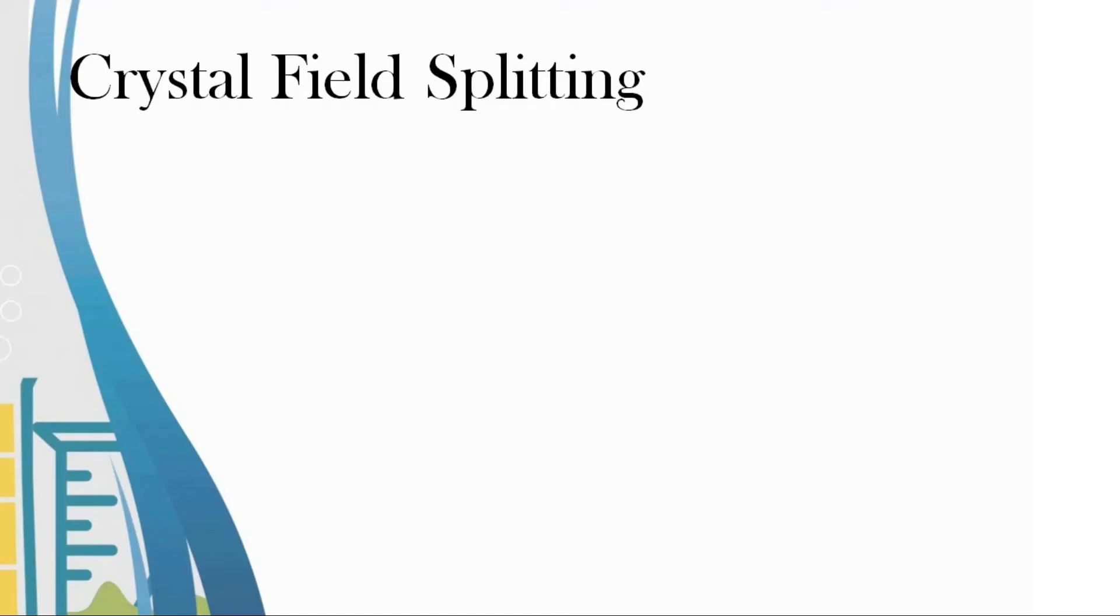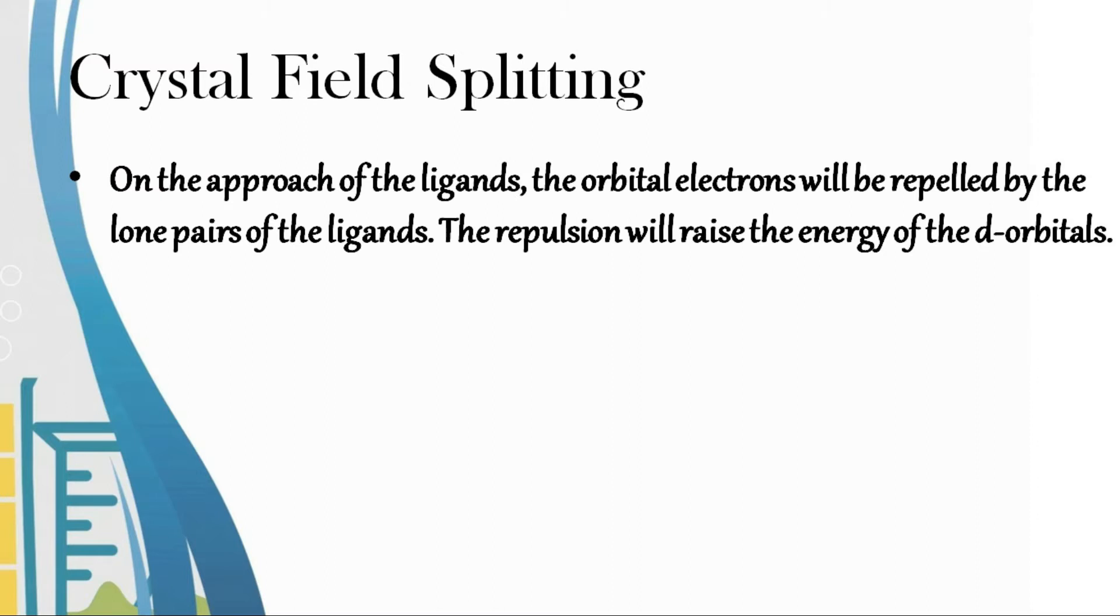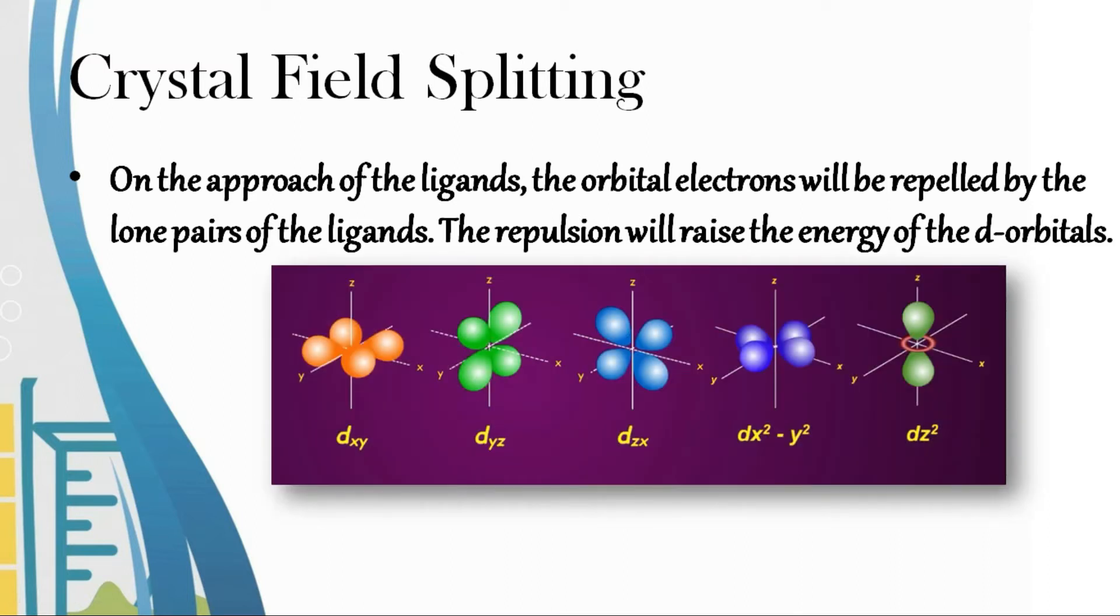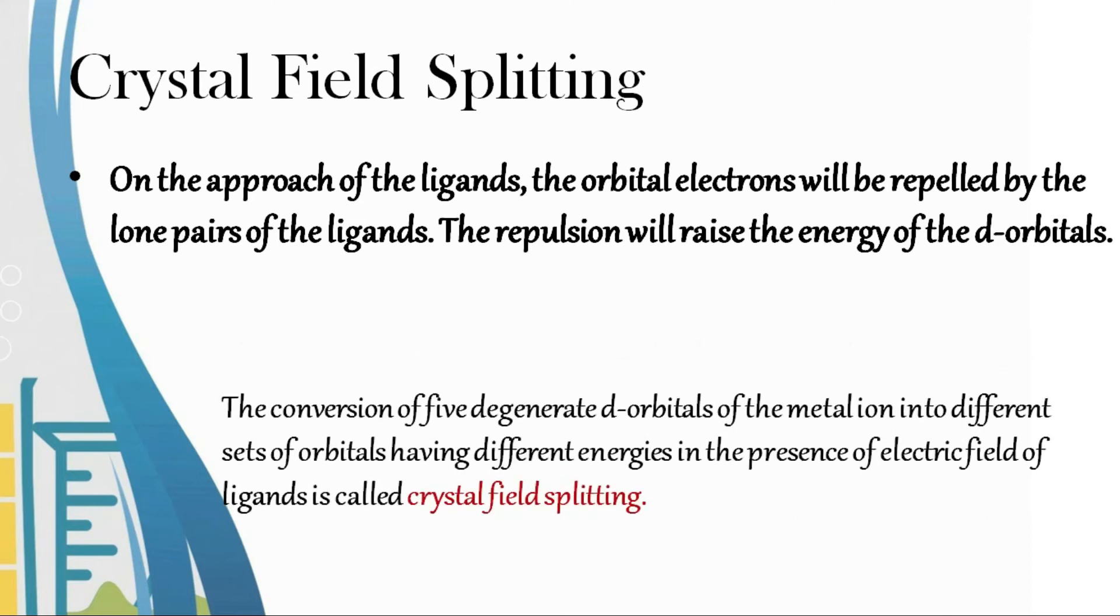When ligands approach the metal, the orbital electrons are repelled by the lone pairs of ligands. The repulsion raises the energy of the d-orbitals. The conversion of five degenerate d-orbitals into different sets of orbitals having different energies in the presence of the electric field of ligands is called crystal field splitting.